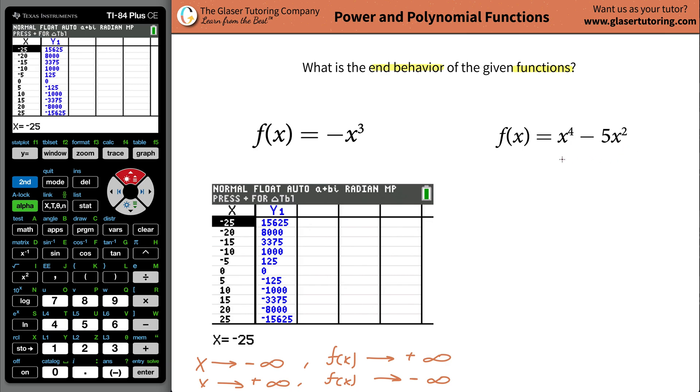So imagine you started with a one here. One to the fourth is just one minus five times one squared would just be one. So one minus five is going to be negative four. I would say that this term now has a large influence over the overall value. Notice how this term became negative five, basically, and then the overall answer is very close to that negative five.